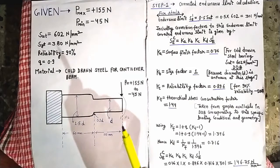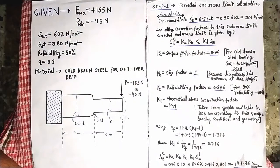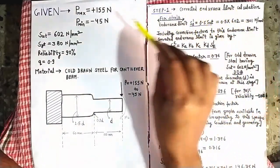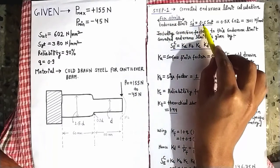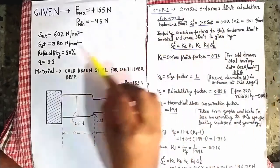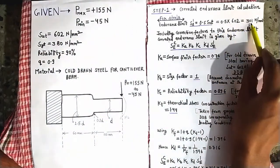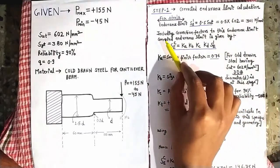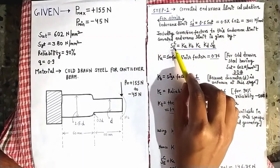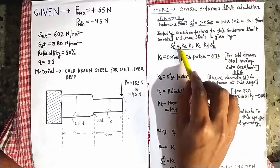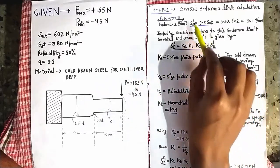In any problem related to fluctuating loading condition, the first step is always to find the corrected endurance limit. For steel, the endurance limit S'E is equal to 0.5 times SUT, the ultimate tensile strength. The ultimate tensile strength is given as 602 Newton per mm², so multiplying by 0.5 we get S'E = 301 Newton per mm². The corrected endurance limit SEC is then given by KA × KB × KC × KD × S'E, where these are all correction factors.